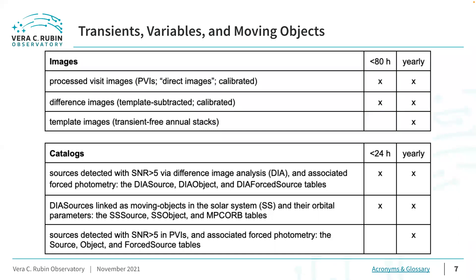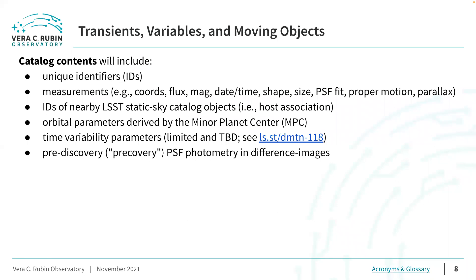The catalogs most relevant to the study of variable objects for which difference imaging is not necessary will be the source, object, and forced source catalogs that result from the detection, measurement, and association of sources in the direct images. Generally, these catalogs will include unique identifiers; measurements like coordinates, fluxes, magnitudes, and shape and size parameters; the IDs of LSST static sky catalog objects that are nearby for host galaxy association; orbital parameters derived by the MPC; a limited set of time variability parameters; and prediscovery photometry and difference images.